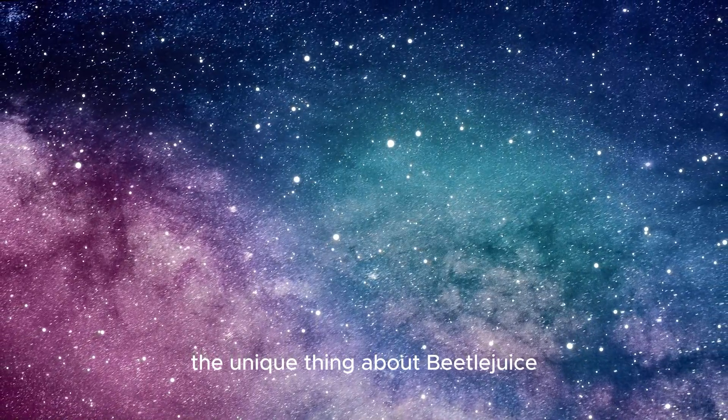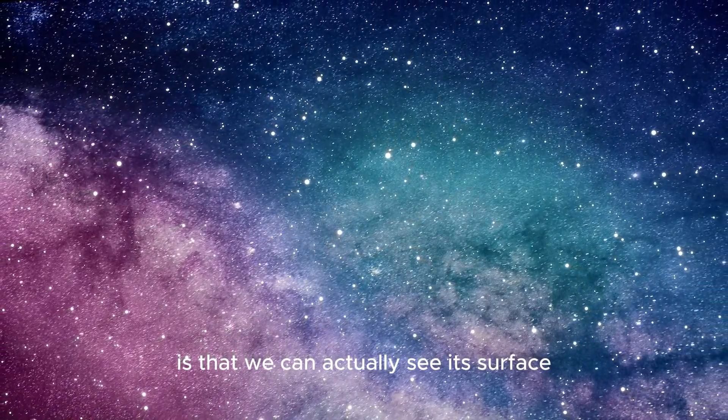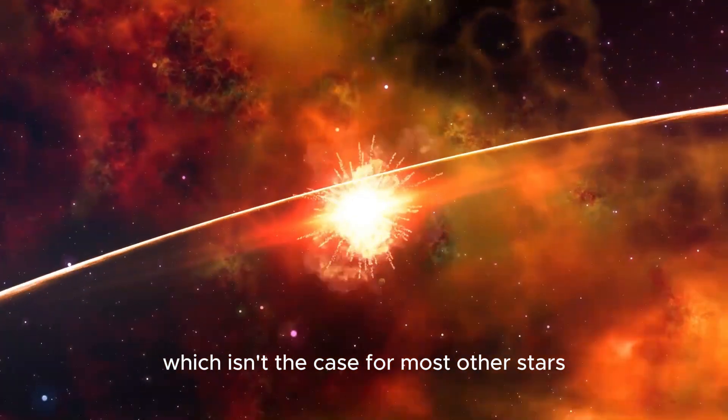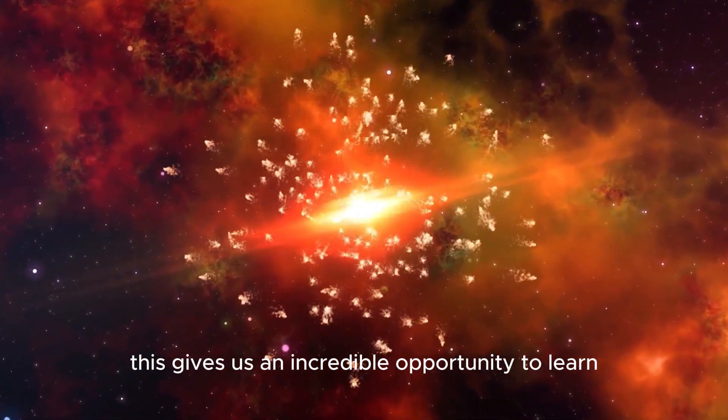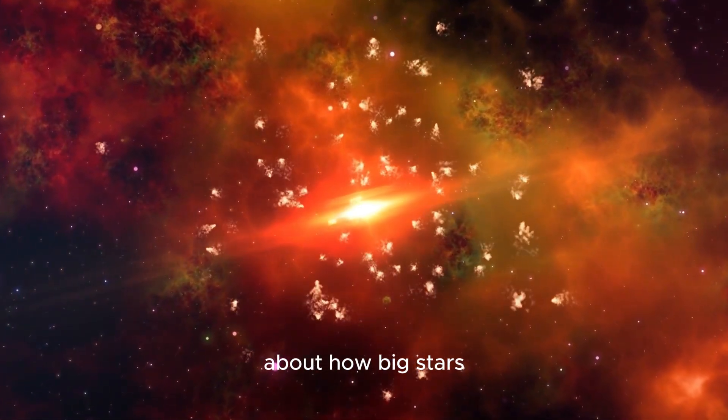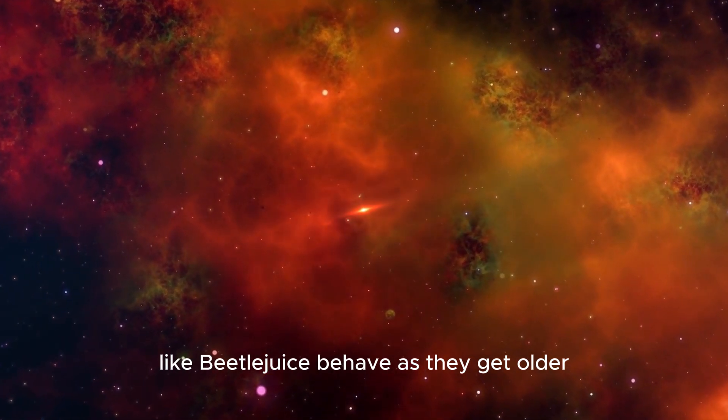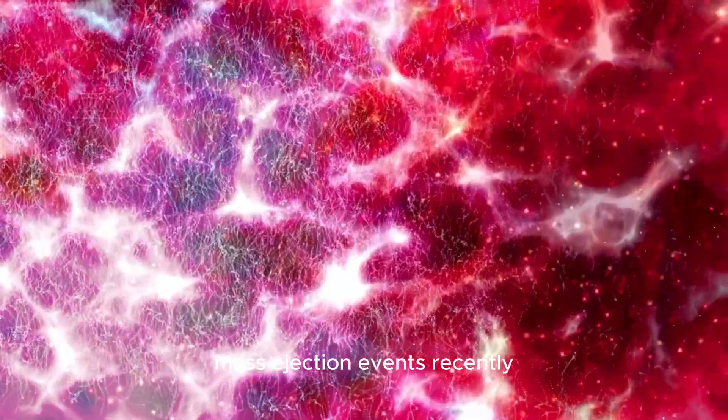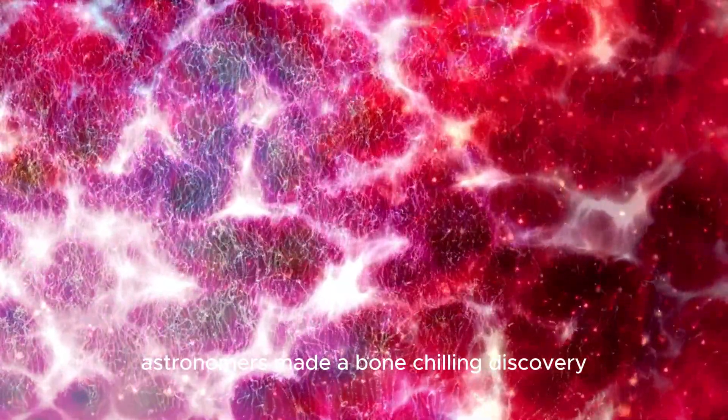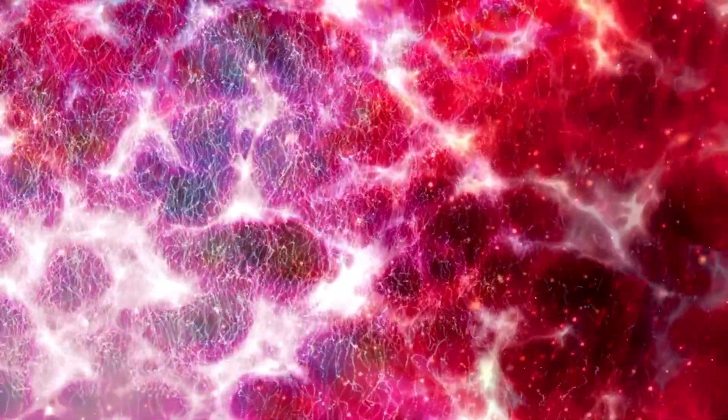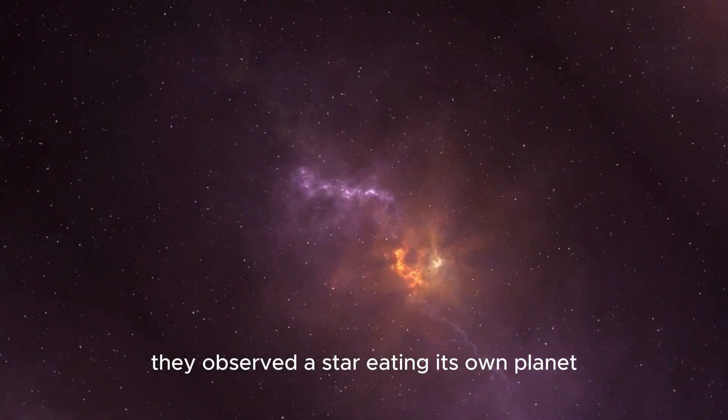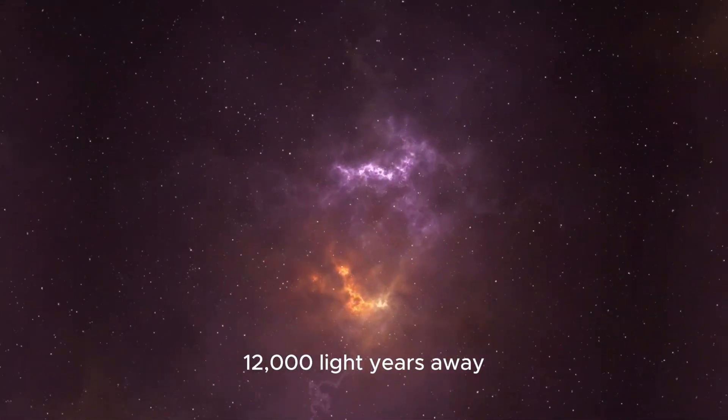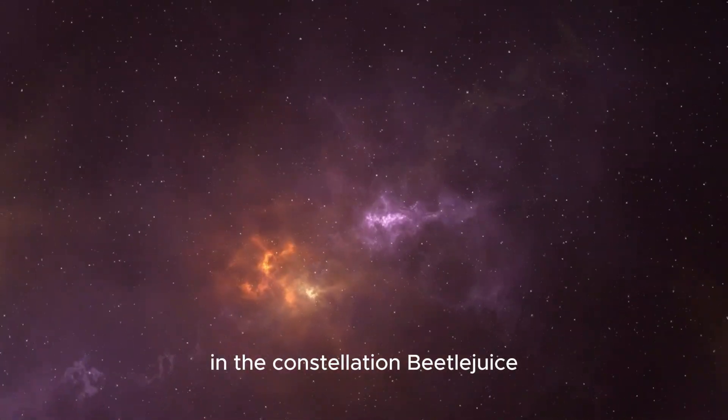The unique thing about Betelgeuse is that we can actually see its surface, which isn't the case for most other stars. This gives us an incredible opportunity to learn about how big stars like Betelgeuse behave as they get older, including these kinds of surprising mass ejection events. Recently, astronomers made a bone-chilling discovery. For the first time ever, they observed a star eating its own planet 12,000 light-years away in the constellation Betelgeuse.